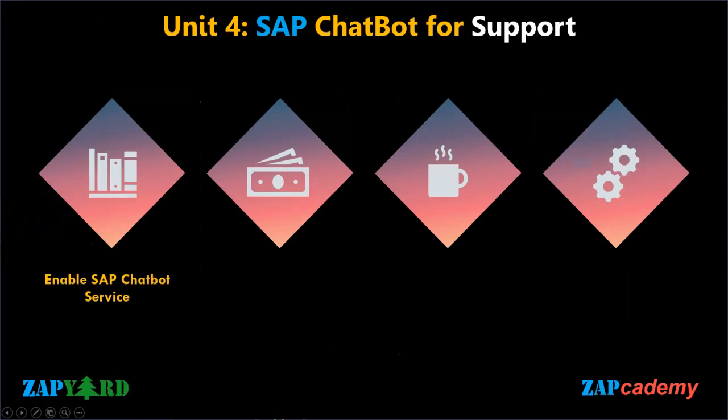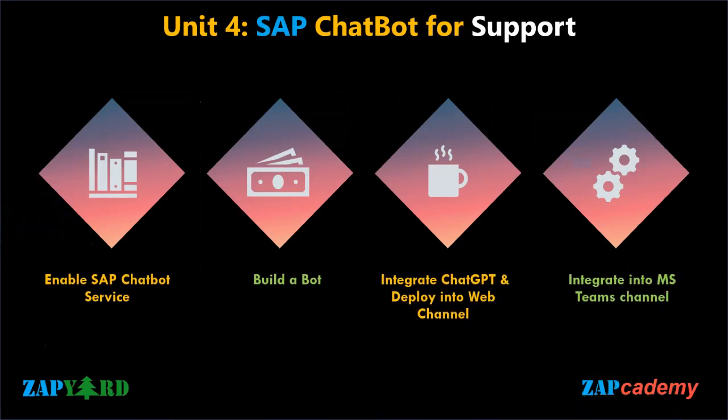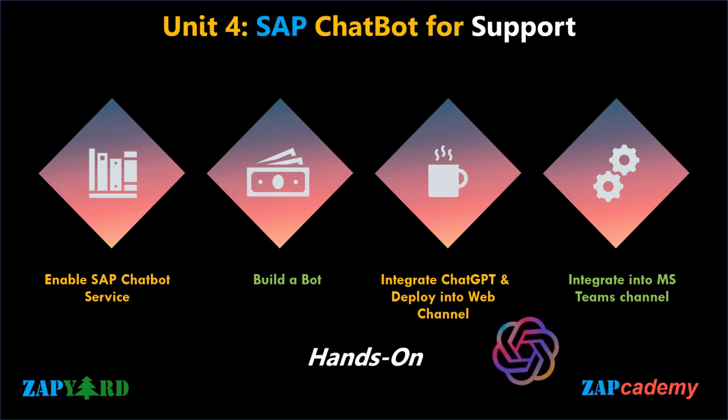In Unit 4, we will construct a bot using SAP Conversational AI to respond to customer inquiries in a more human-like manner, along with integrating into the web channel and configuring it for Microsoft Teams. The first step is to enable the SAP chatbot services within your SAP environment. This service provides the necessary tools and capabilities to build and deploy intelligent chatbots using SAP CAI. Next, build the actual bot utilizing SAP CAI — define the conversational flow, create intents and entities, and train the bot using relevant data. Design the bot's responses to be more human-like and engaging, ensuring it understands customer inquiries and provides appropriate answers.